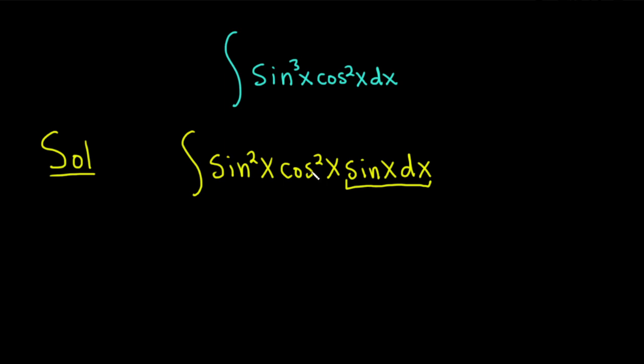So that means u has to be cosine. So we have to turn this also into cosines. So our u is going to be cosine x.